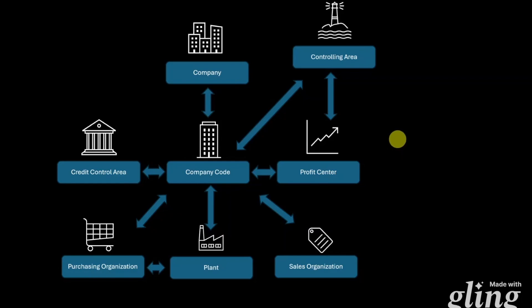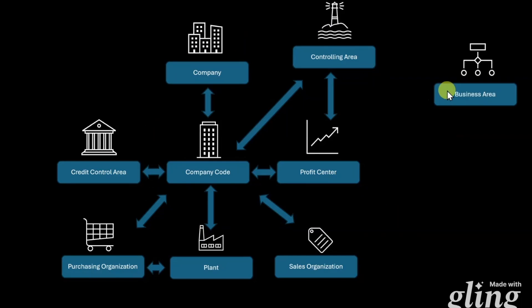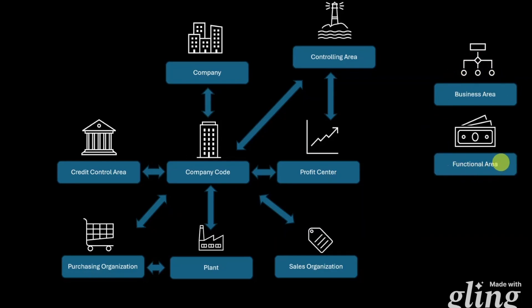There are three more organizational objects I want to explain briefly, which are not directly linked to the ones already covered. The so-called business area was formerly used for segmental reporting based on business lines — we could create balance and profit and loss statements based on business areas instead of company codes. However, I do not recommend using this anymore; in SAP we should use the so-called segment. Next, the so-called functional area is used for organizations utilizing the cost of sales accounting approach to define the profit and loss statement. I explained this extensively in another video and will leave the link in the description.